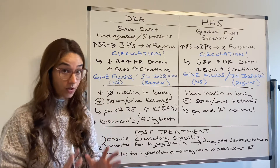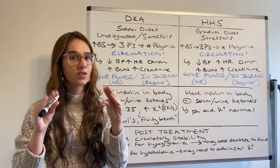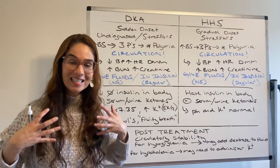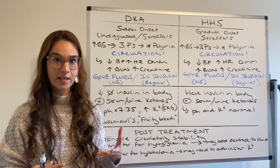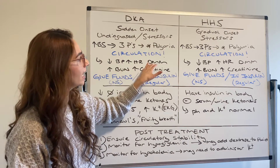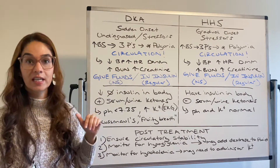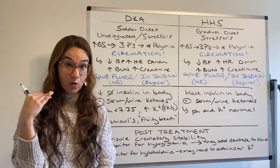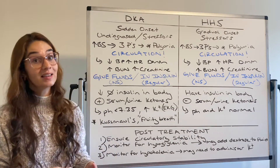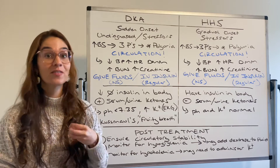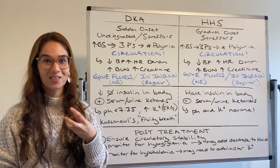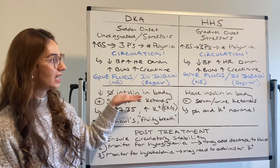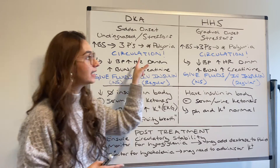Anytime we've lost volume, our blood pressure goes down. Our heart starts pumping faster and faster — so we have tachycardia because we want to circulate whatever volume is left in our body. We need to get oxygen perfused to the rest of our cells and tissues. And then we have dry mucous membranes. Let's think about what happens to our kidneys: when we're in trouble with circulation, oxygen is going to perfuse to the vital organs — heart, lungs, and brain. The kidneys can last a little bit longer, so we might start to see increased BUN and increased creatinine.